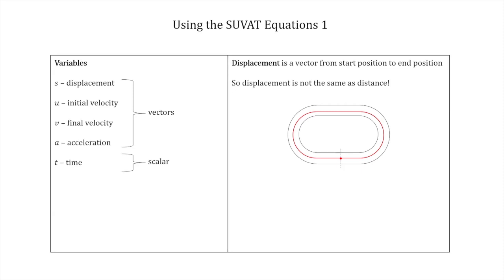The reason this confuses some people is that we introduce these as vectors, but in the first problems we encounter, we're only considering movement in one dimension. In that case, we don't write these as column vectors — we just write them as single numbers — but they're still vectors because they still have a direction.